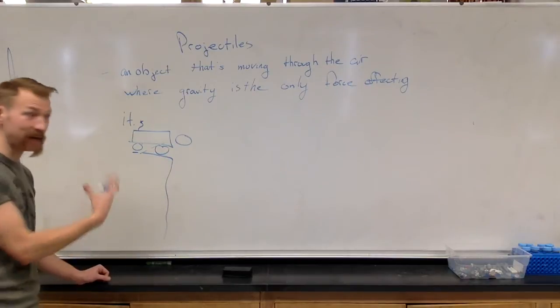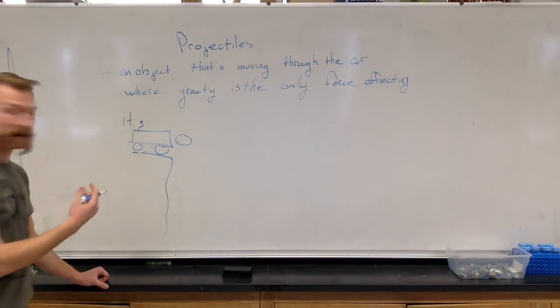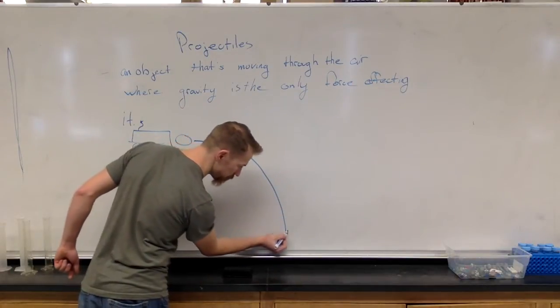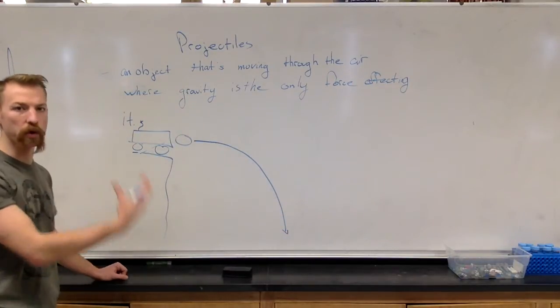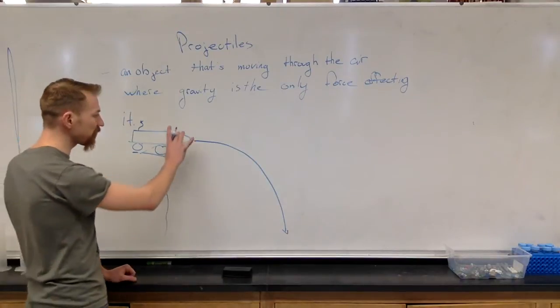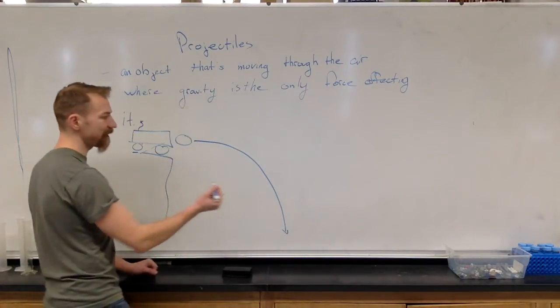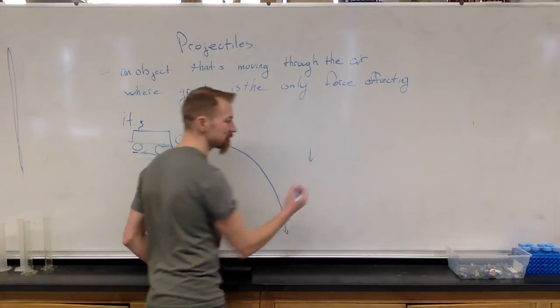All projectiles, because the only force acting on them is gravity, end up moving in a parabolic arc until they hit the ground or hit something. So here we've got a projectile moving through the air. It's dropping, it's dropping, it's dropping, and in fact, it's increasing its speed downward.